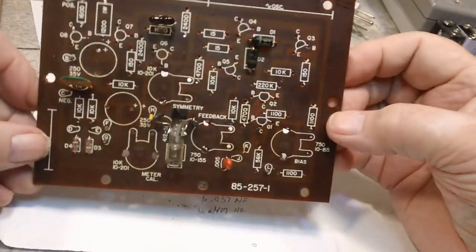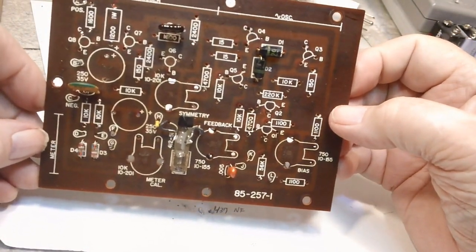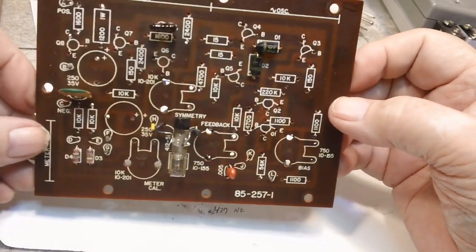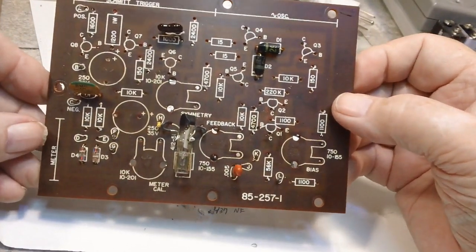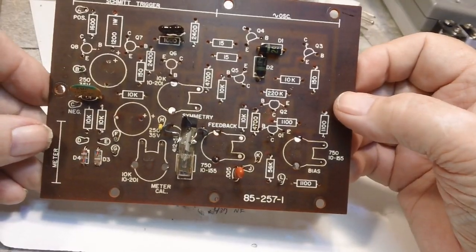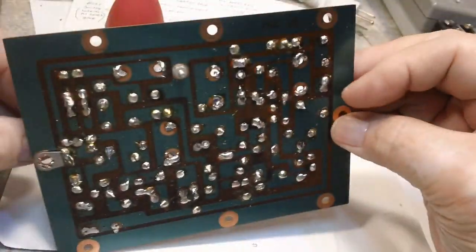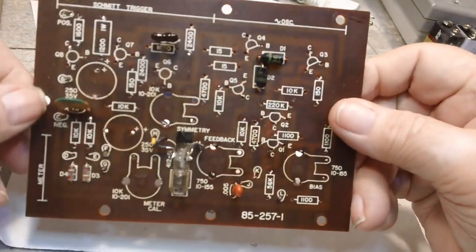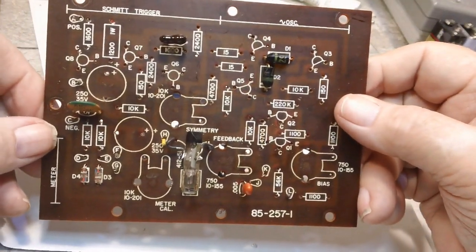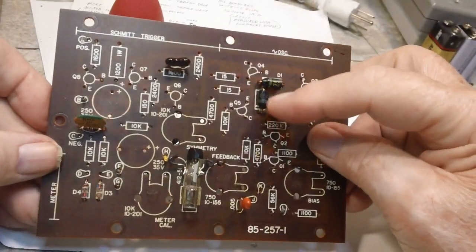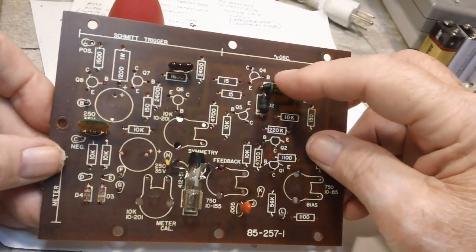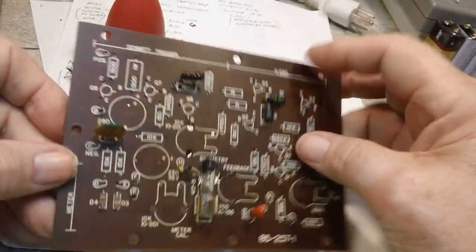I've been working on this main board for the audio generator, the Heathkit. I have those all removed. I've removed all the resistors first. I probably will just test these diodes, leave those on. I don't think I'm going to mess with the mica, silver mica, whatever it is.